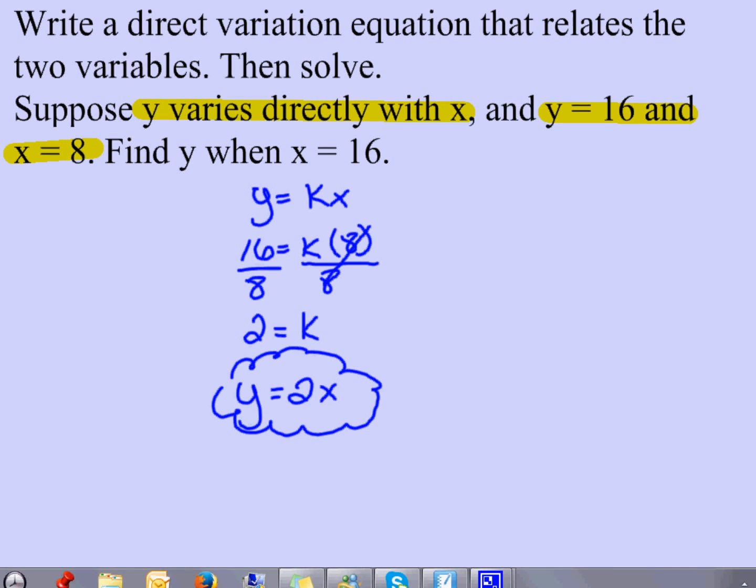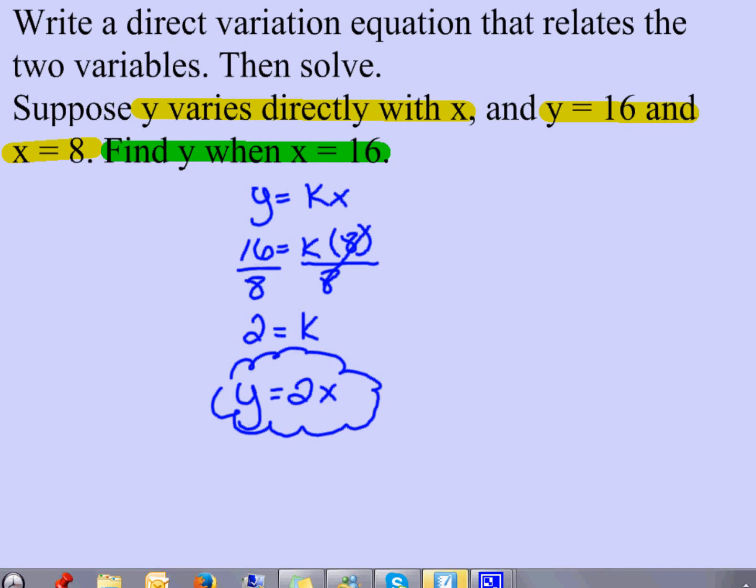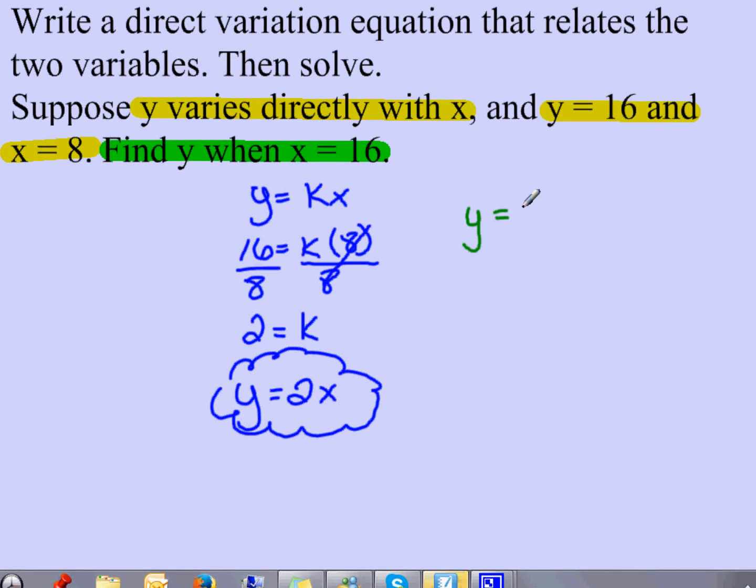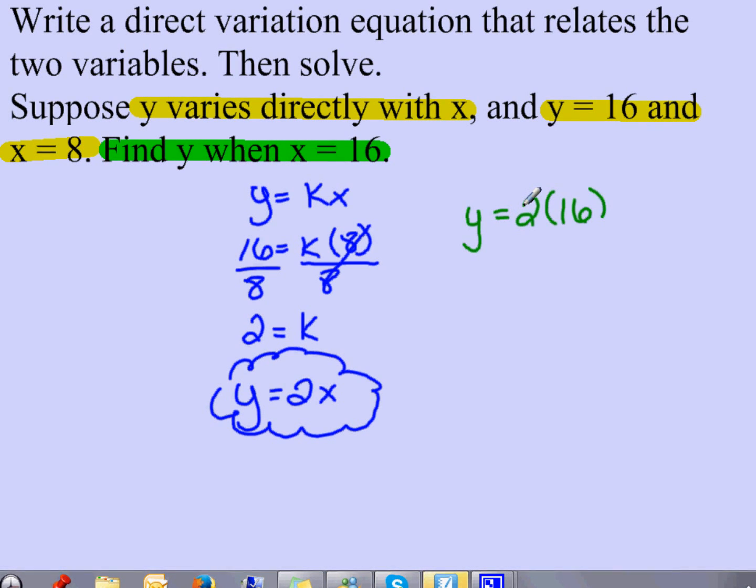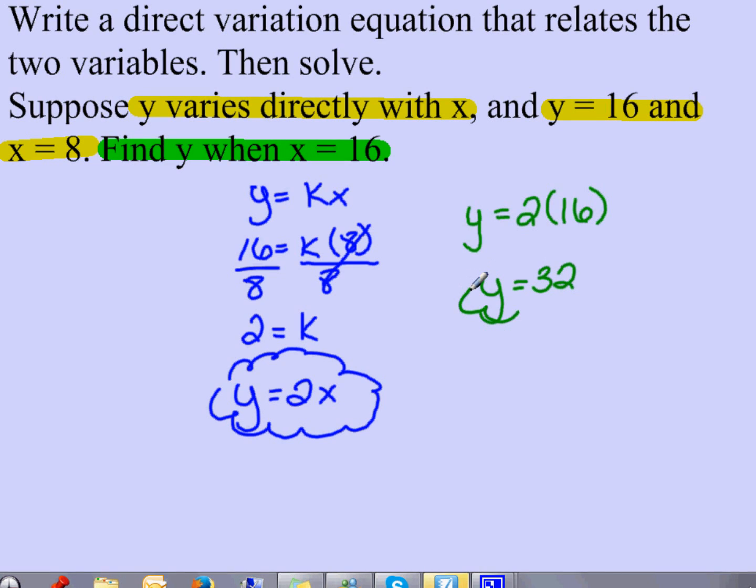So I can answer the second portion, which is to find y when x equals 16. To do that I'm going to plug 16 for x. So I have y equals 2 times 16. And now I'm going to multiply and what I get is y equals 32. And that's the second portion.